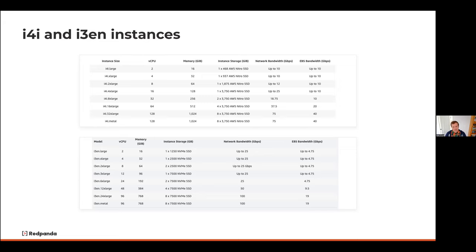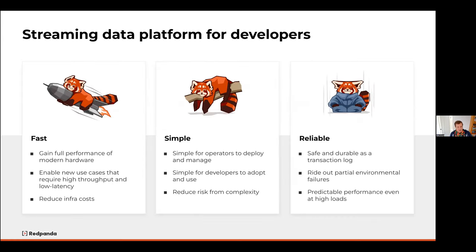Before digging into the benchmarks, you probably have the question: what is Red Panda? Red Panda is a streaming data platform that's fully Kafka API compatible. If you're familiar with Kafka or have run Kafka workloads, Red Panda can be a drop-in replacement for those workloads. Where we differ from Kafka is that we are really focused on modern hardware — fully written in C++, making use of optimizations like XFS as a file system for out-of-order writes and pre-allocation. We're focused on low latency, whereas Kafka is typically focused on higher throughput. We can do high throughput, but also low latency, typically with a large reduction in overall hardware.